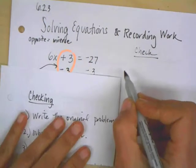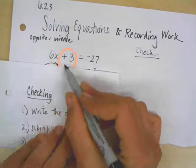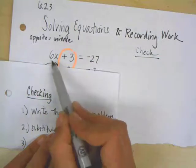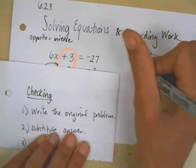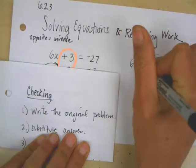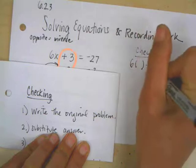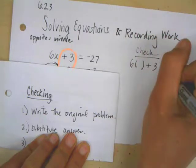So let's look at that. The first step is I'm going to write my original equation. Now, the way that I like to do it is wherever I see the variable, I'm just going to put parentheses. So I'm writing my original problem, but instead of the x, I'm going to put parentheses.